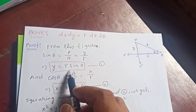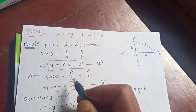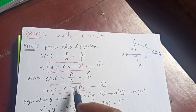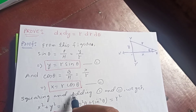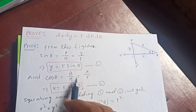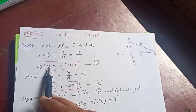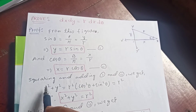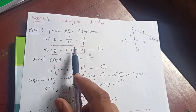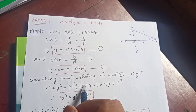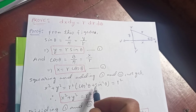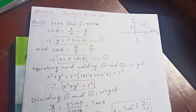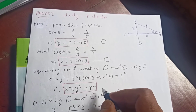So y over hypotenuse r gives us y = r sinθ. And cosθ is base by hypotenuse, so x by r, giving us x = r cosθ. These are equations 1 and 2 — very important, these represent the change from Cartesian to polar coordinates. Squaring and adding equations 1 and 2, we get x² + y² = r²(cos²θ + sin²θ) = r², since cos²θ + sin²θ = 1. So x² + y² = r².